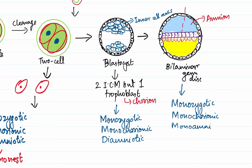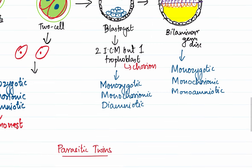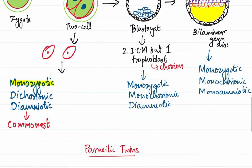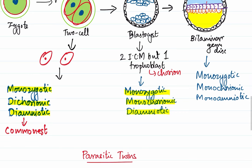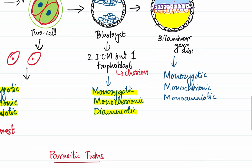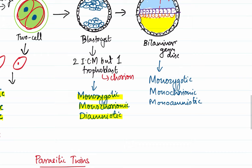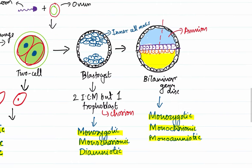So these are the three possibilities for monozygotic twins. First, monozygotic dichorionic diamniotic twins, which develop at the two-cell stage. Then monozygotic monochorionic diamniotic twins, which develop at the blastocyst stage. And finally, before the formation of the primitive streak, we have monozygotic monochorionic monoamniotic twins.